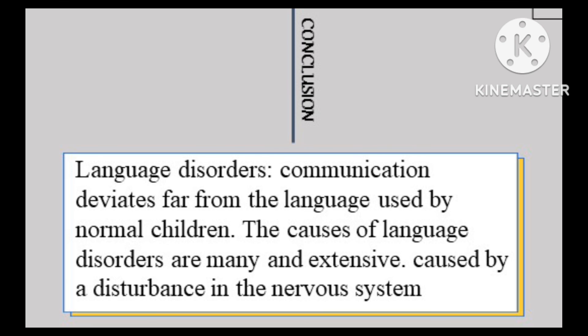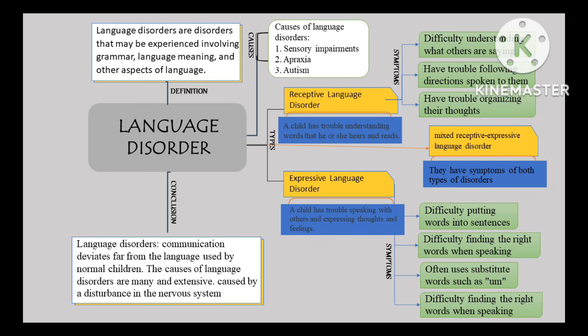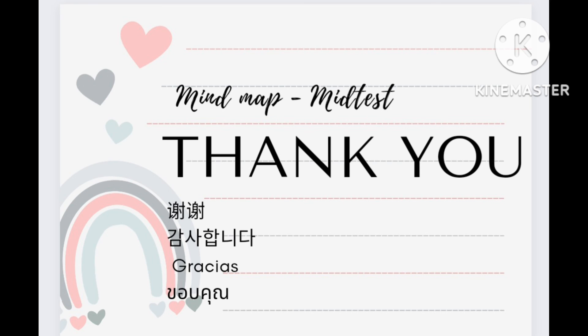The causes of language disorders are many and extensive. This can be caused by a disturbance in the nervous system or abnormalities in the organs associated with the language process. One of the symptoms in children with language and speech disorders is pronunciation errors both in the movement mechanism of the articulation point and in pronunciation. That's all for our discussion today. Thank you.